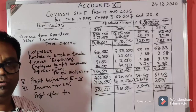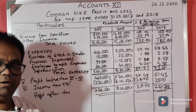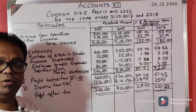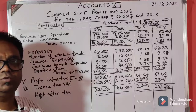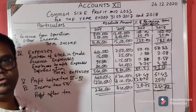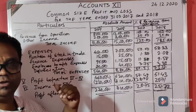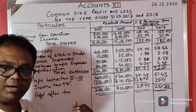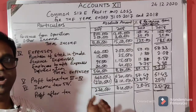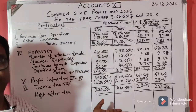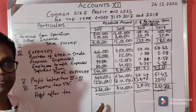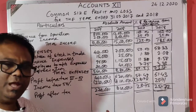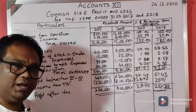So there are two common size statements: common size balance sheet and common size profit and loss account. I hope you have understood. Continue practicing problems — it is a very easy topic. If you have any doubts, message me and I will send you the solution. Thank you, have a good day.